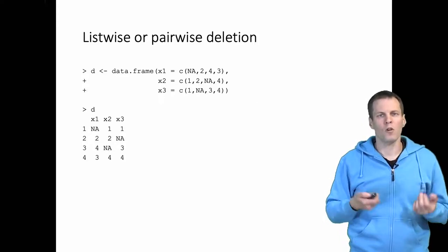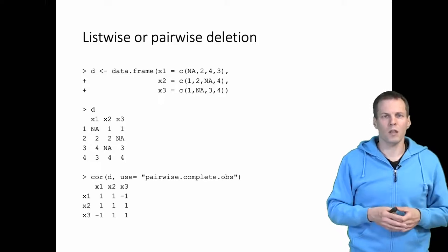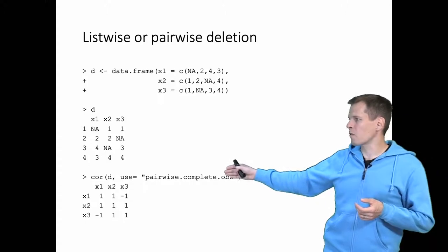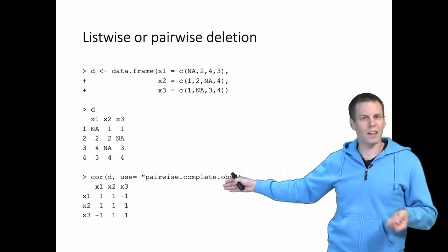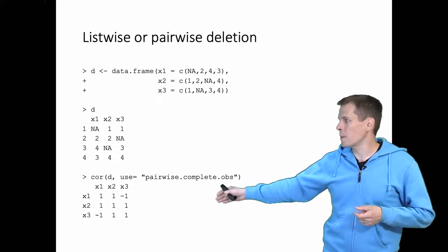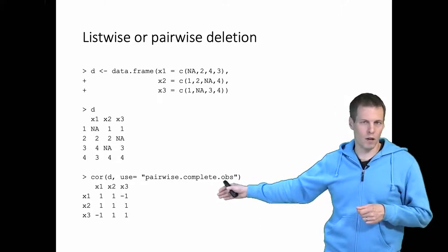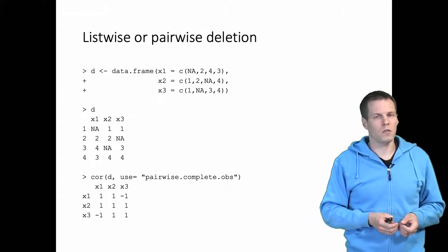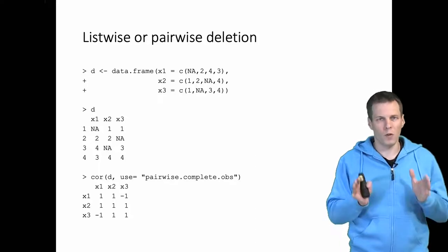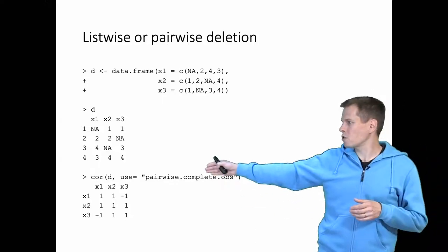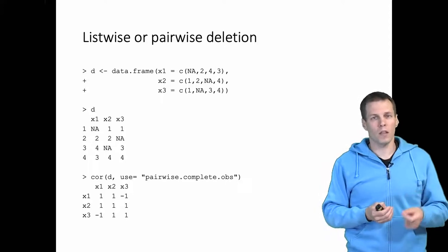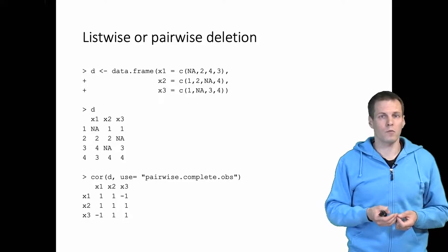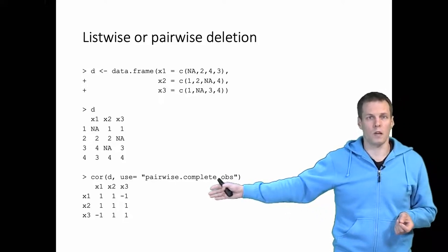To show why it's problematic, let's look at what the correlations look like. We get a correlation matrix where x1 correlates perfectly with x2, perfectly negatively with x3, and x2 and x3 correlate perfectly positively. This is an impossible correlation matrix. You cannot have two variables — x2 and x3 — that are perfectly correlated where one correlates positively and one correlates negatively with a third variable. No real data set would produce this kind of matrix.